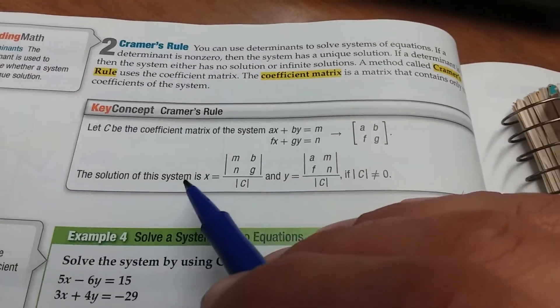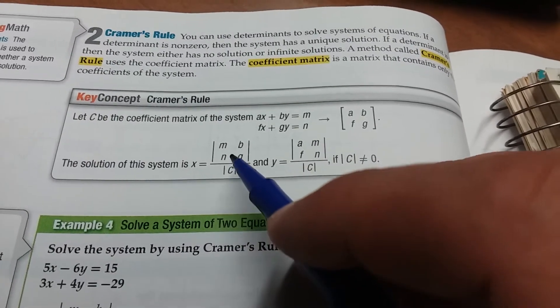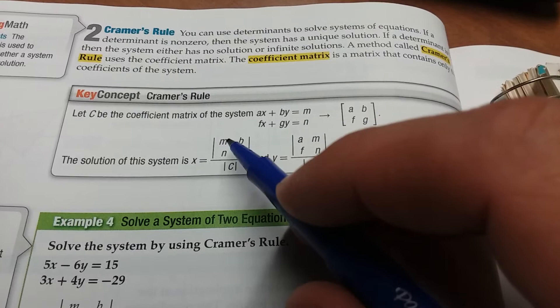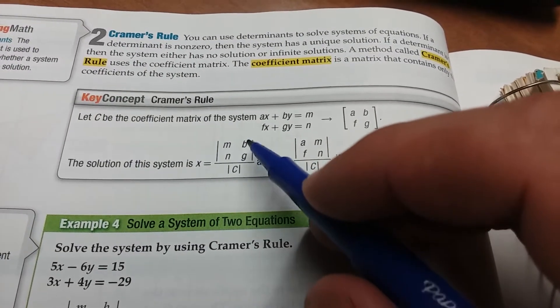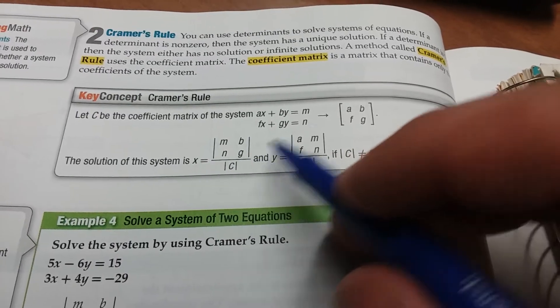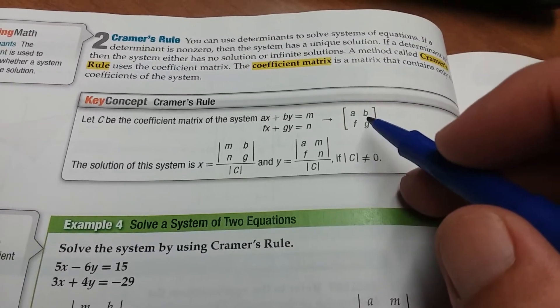All right, the solution of this system is x equals the determinant of the last column right here, M N, the second column, B over G, divided by the determinant of this matrix.